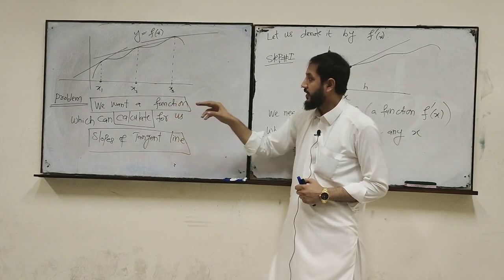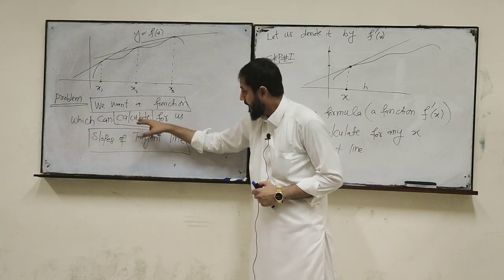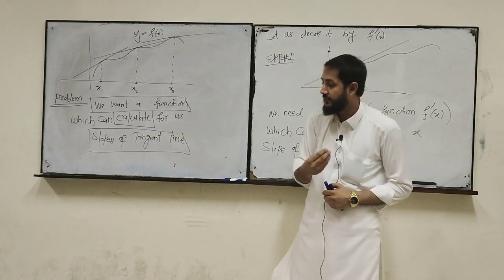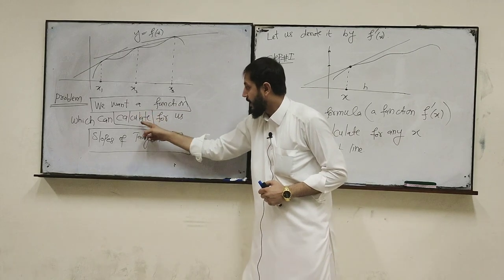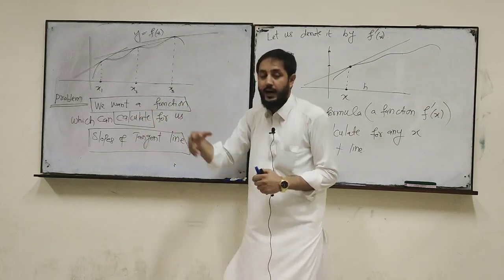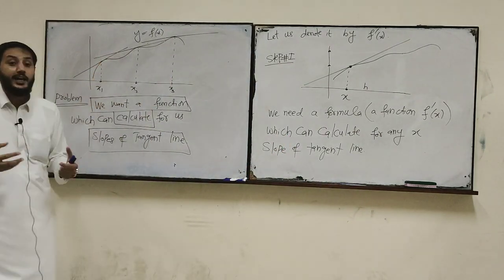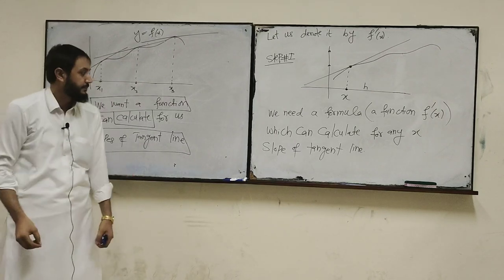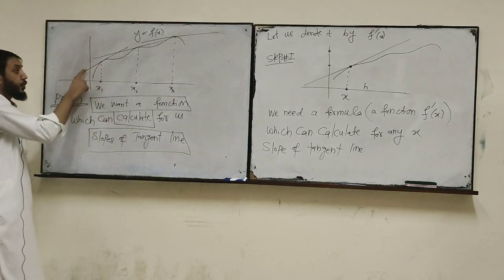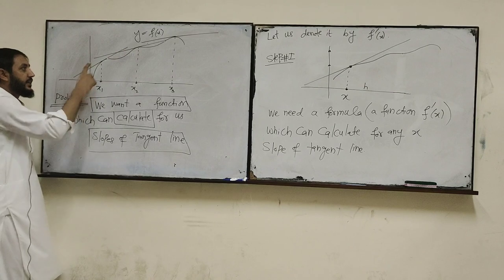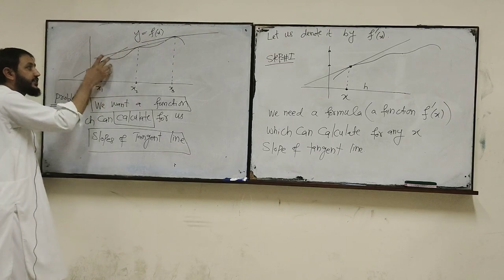We want a function — ہمیں ایک function چاہیے basically — which can calculate for us the slope of the tangent line. یہ main problem ہے. We want a function which can calculate for us — this function is given — ہم ایک دوسرا فارمولہ چاہیے، ایک دوسرا function چاہیے جو کہ ہمارے لئے tangent lines کی چڑھائیاں calculate کر سکے. So we are interested in their slopes basically.